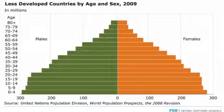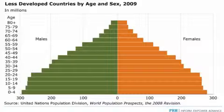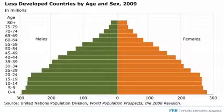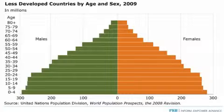If you said that this group of countries is going to grow in size, you're right. As we look at the base of the pyramid, we see how wide it is. So every five years, a larger and larger group moves up the ladder and eventually into the childbearing years where they have children of their own. We can see that this group of countries is going to grow and probably grow pretty rapidly.